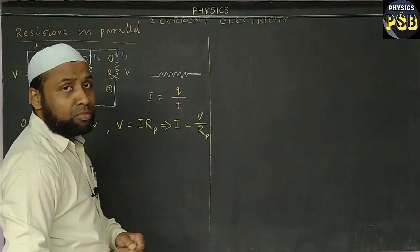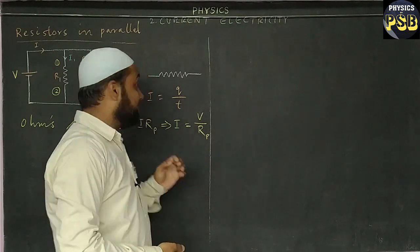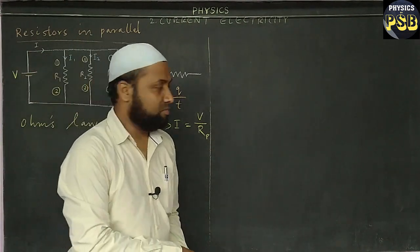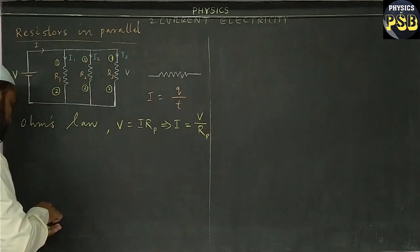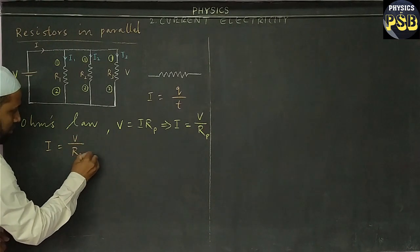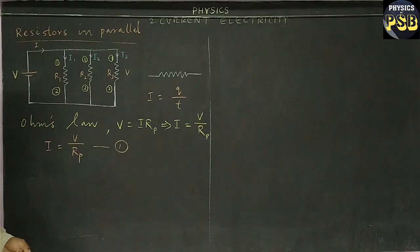Here for my convenience I take R as RP. P stands for parallel combination, and RP is the equivalent resistance of resistors connected in parallel, or total resistance of resistors connected in parallel. I take this as equation number one: I equals to V upon RP.